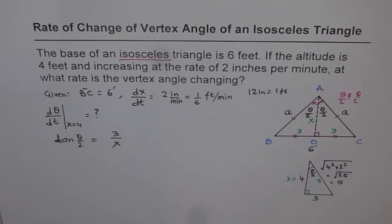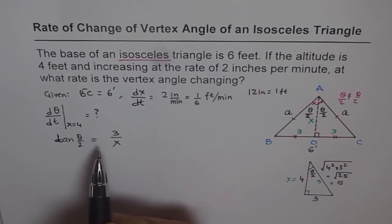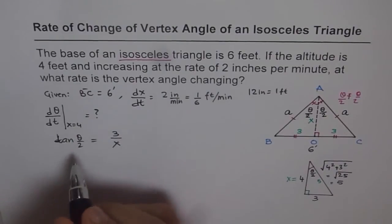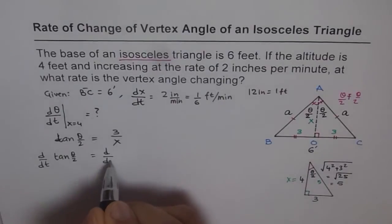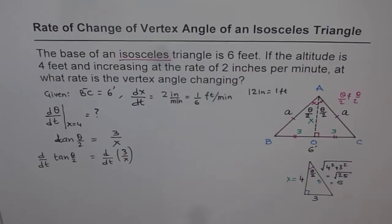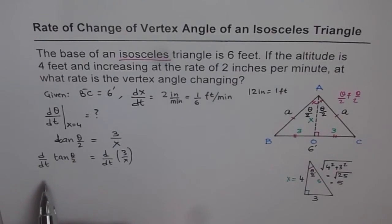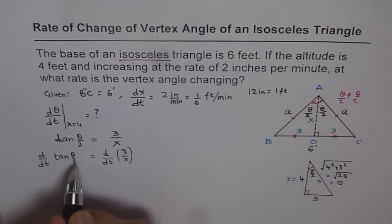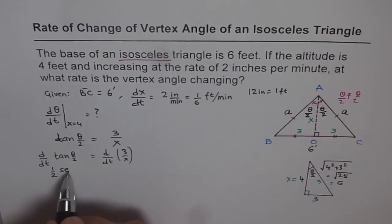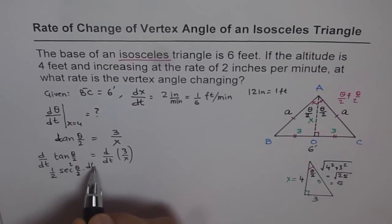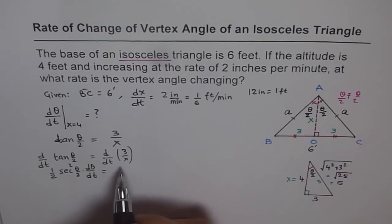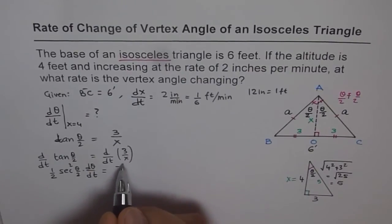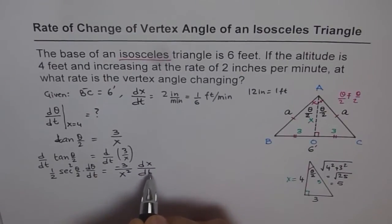We want the rate of change of theta with respect to time, so we differentiate both sides with respect to t. We get d/dt of tan(theta/2) equals d/dt of (3/x). The derivative of tan(theta/2) by the chain rule is secant squared(theta/2) times (1/2) times d(theta)/dt. On the right side, the derivative of 3/x is minus 3 over x squared, times dx/dt.